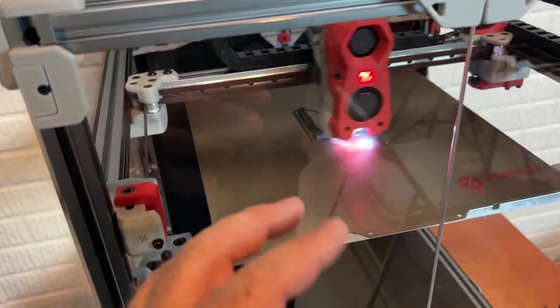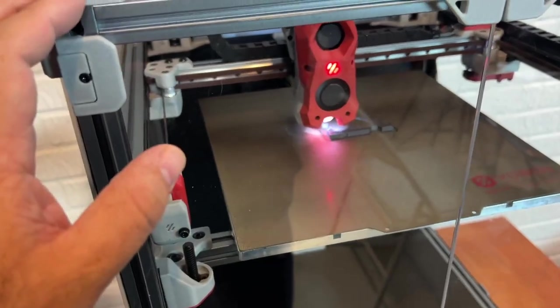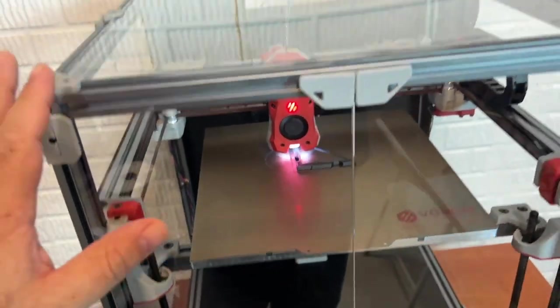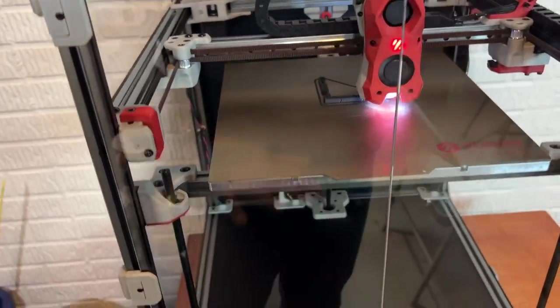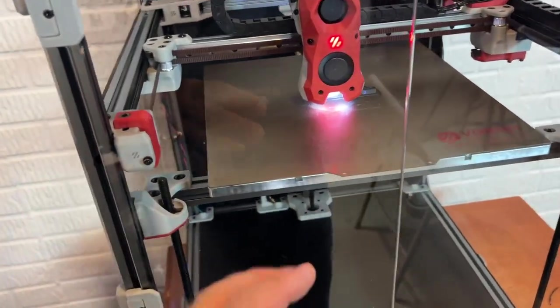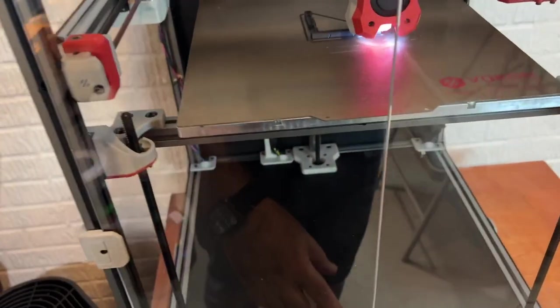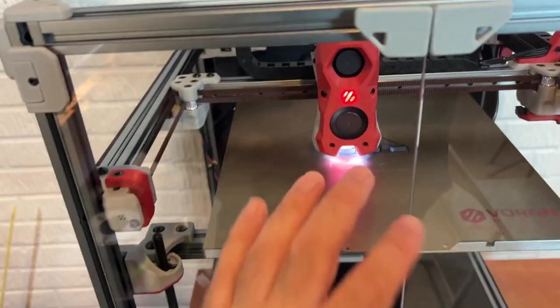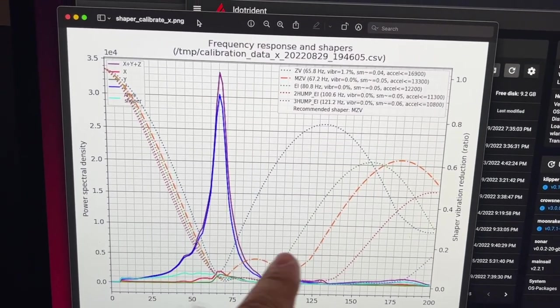When you are doing the initial input shaper, when you're running the ADXL 345, I recommend you try to put your printer in however you're going to be using it. So ideally with all the panels on, especially ideally the doors closed even if you can. I know for me it was a little hard because the cord had to go through here so I just left the door open.